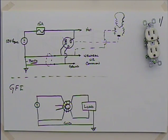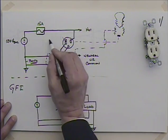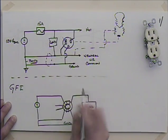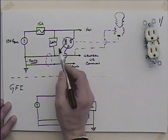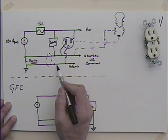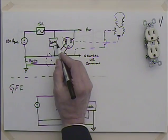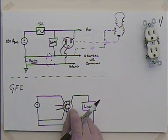Student asks why isn't the common also ground. Well, remember we need the common because we're going to be running our loads between the hot and the common. Everything works just fine even if you cut the ground off, but the ground is simply there for your protection. If you have some sort of a short, it'll go to ground rather than going through you.